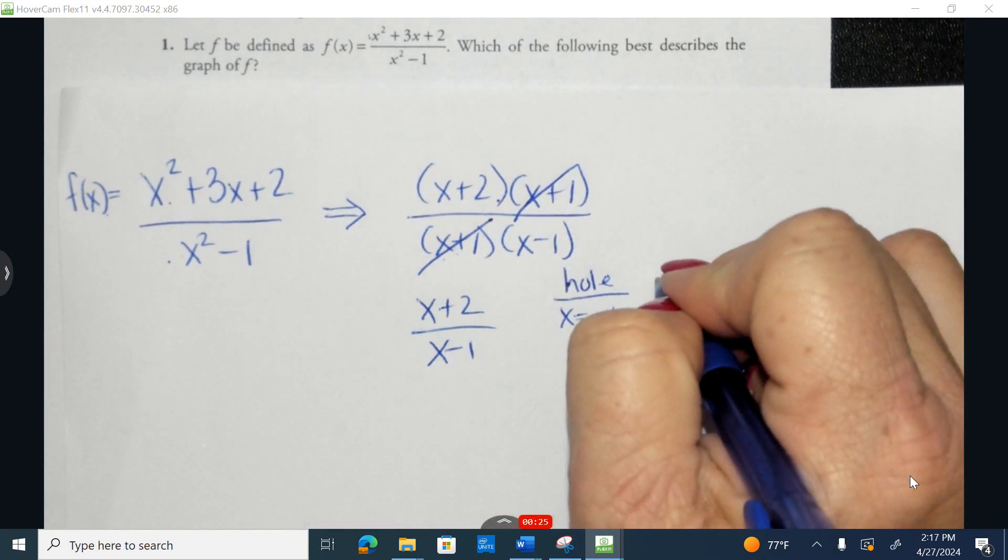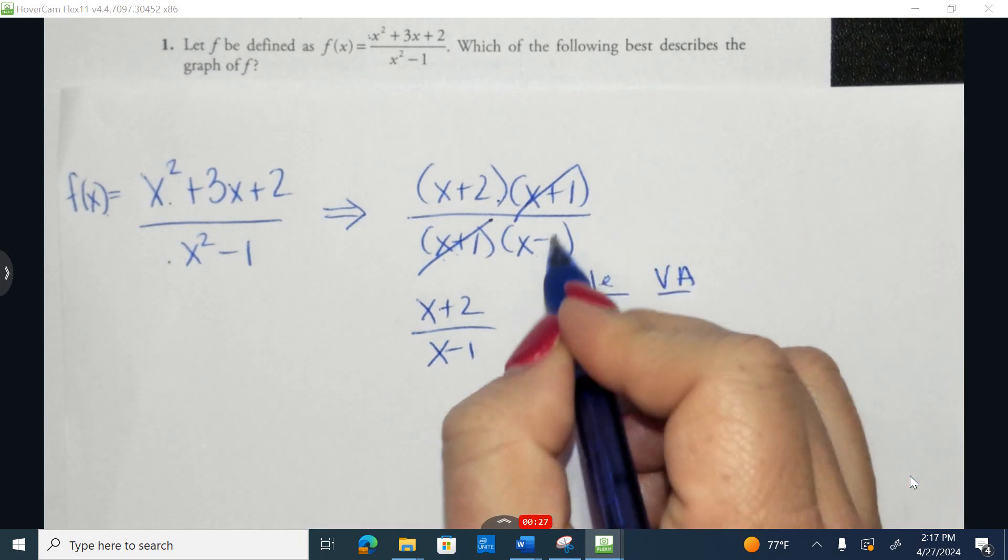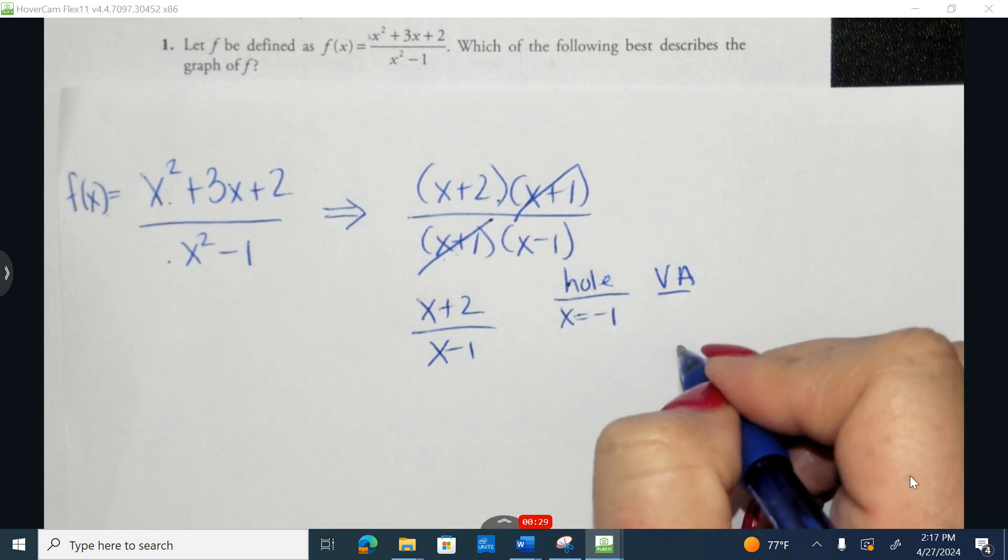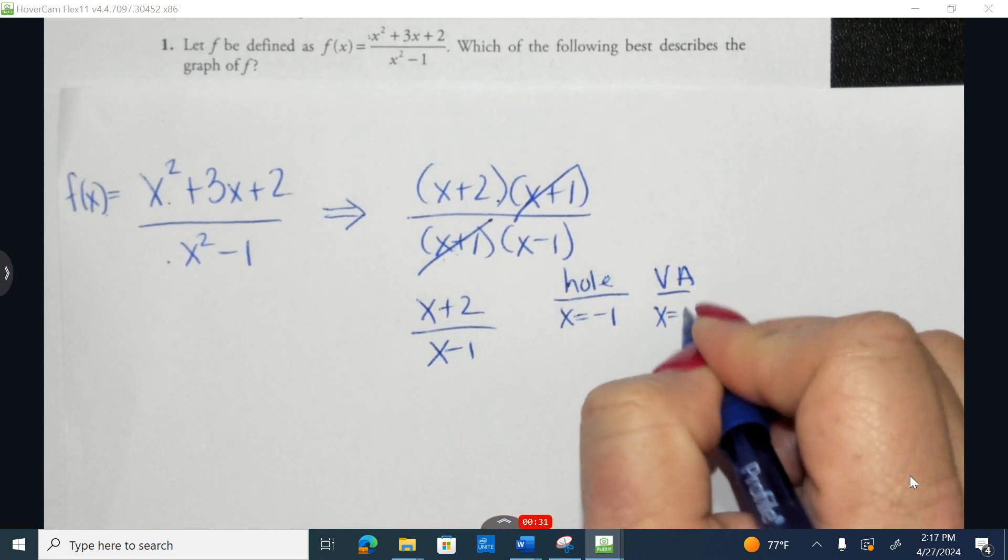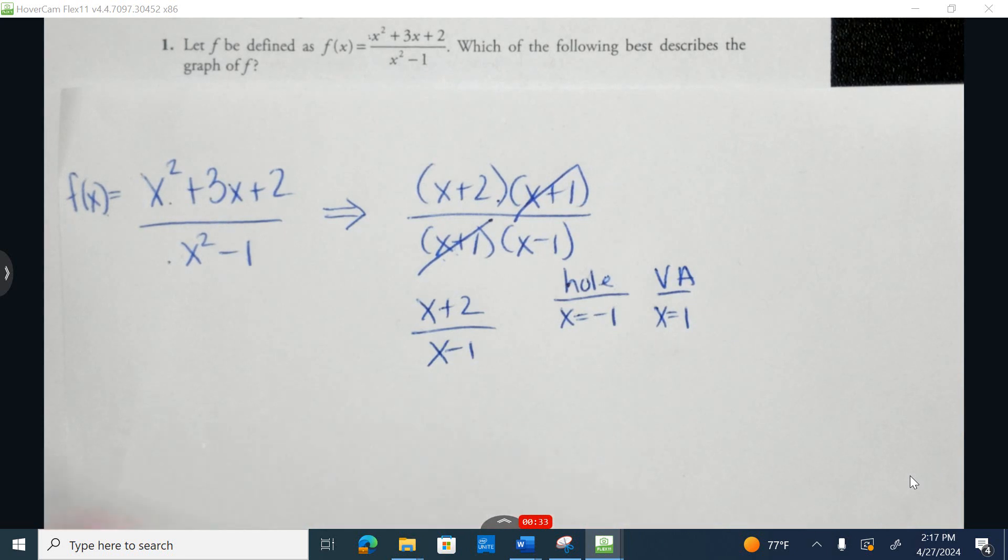Whenever I'm able to simplify, a hole in the graph will be there. A vertical asymptote - I take the remainder in the denominator, set it equal to 0, will be at the equation x equals 1.